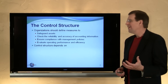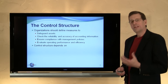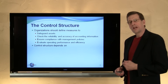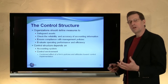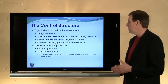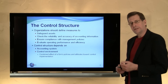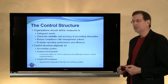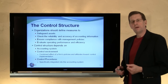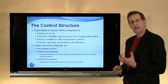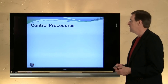There are a number of issues in the control structure of a business as you can see. The control structure really depends upon the accounting system in use, the general control environment — which is the combined effect of a firm's policies and attitudes toward control — and finally control procedures, which are the specifically integrated components in the accounting system that help control the transactions and event processes of the business.